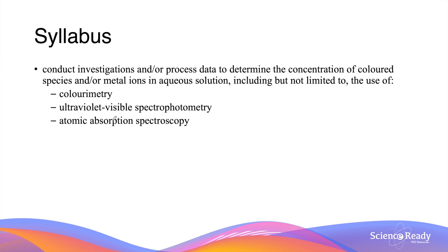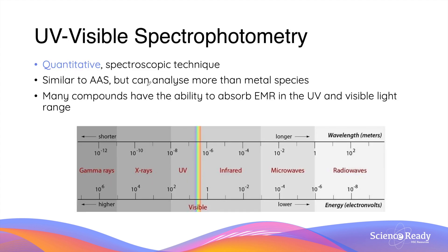Hello everybody. This video will be on ultraviolet visible spectrophotometry and colorimetry. Ultraviolet or UV visible spectrophotometry is another quantitative spectroscopic technique. The way it works is very similar to AAS, but it can also analyze concentrations of more than just metal species. UV visible spectrophotometry relies on the fact that many compounds have the ability to absorb EMR in the ultraviolet and visible light range.